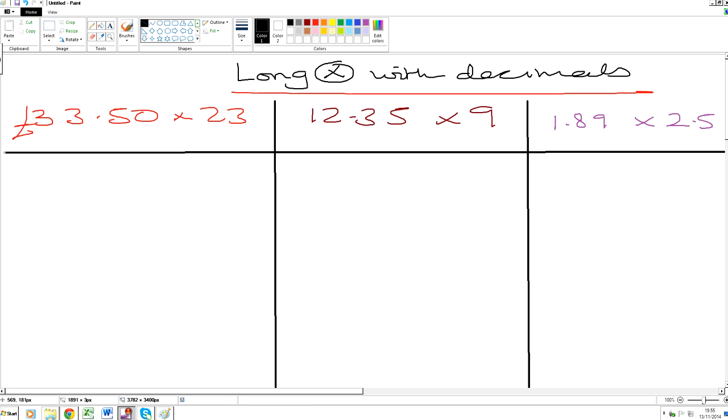Okay, welcome folks to long multiplication of decimals. So the first question is 33.50 times 23. What we need to do first of all is count the number of decimal places. So look over here. 1, 2. Here's the decimal point. We have two decimal places in our questions.